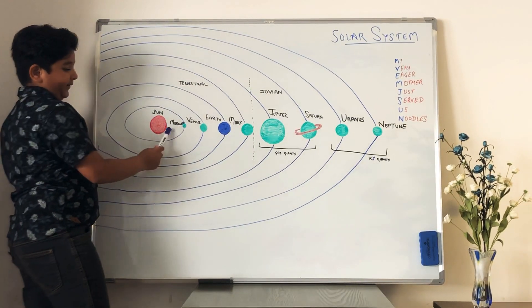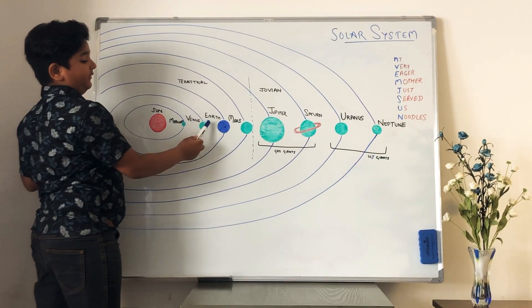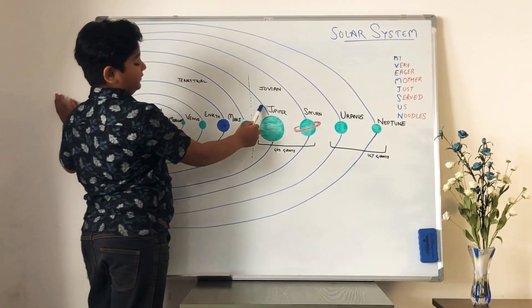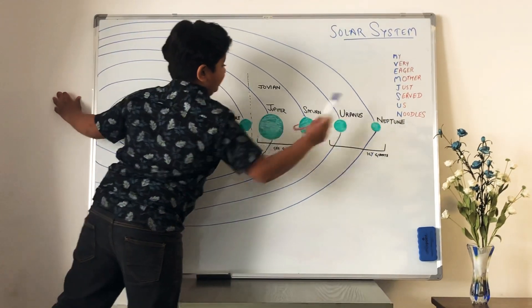Known as Mercury, Venus, Earth, Mars, Jupiter, Saturn, Uranus and Neptune.